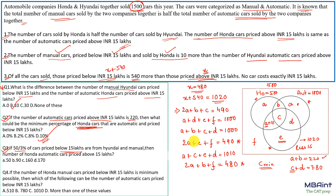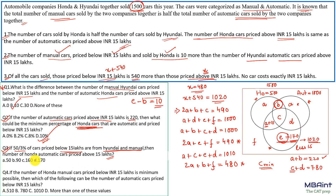Question 3: 50/3 percent of cars below 15 lakhs are from Hyundai and manual (region e). Since 50/3% equals 1/6, and total below 15 lakhs = 1020, value of e = 1020/6 = 170. From Question 1, e − b = 10, so b = 160. The number of Honda automatic cars priced above 15 lakhs = 160.